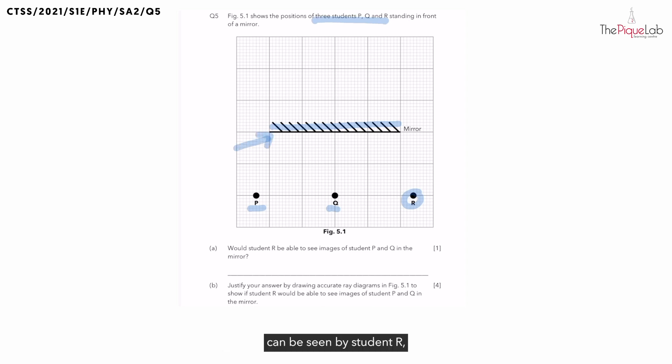Since we need to check if P and Q can be seen by student R, first I would draw an eye at R. Should the light rays be going towards or away from the eye? It should be going towards the eye of student R. You'll be surprised how many students got these directions wrong when we use this exact question for a test.